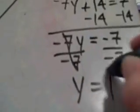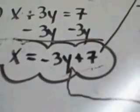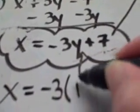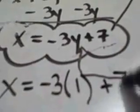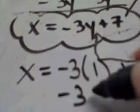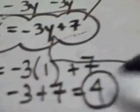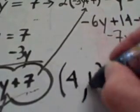So I'm going to take this y equals 1 that I just found and plug it in to the y right there. So x equals negative 3 times 1 plus 7. That's negative 3 plus 7, which equals 4. So with an x that equals 4 and a y that equals 1, I just found the ordered pair that is a solution to this system of equations. The ordered pair 4, 1.